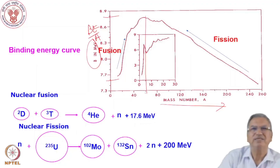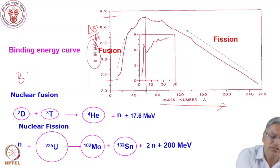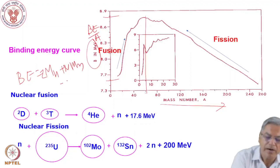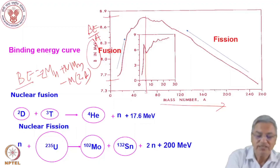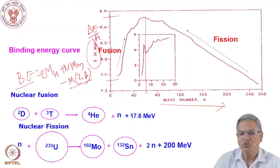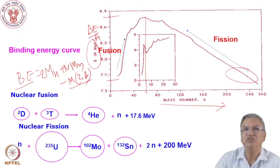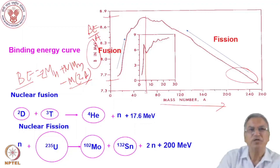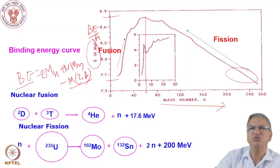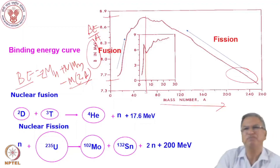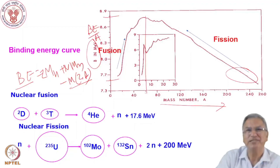If you recall the relationship between binding energy and masses: binding energy equals Z·M_H plus N·M_N minus the mass of the nucleus. So higher the binding energy, lower is the mass. Nuclei on the heavier side have low binding energies, so their masses are higher. In terms of mass defect — if mass defect is positive, masses are higher and binding energies are low; if mass defect is negative, binding energies are high.